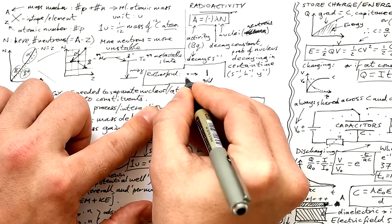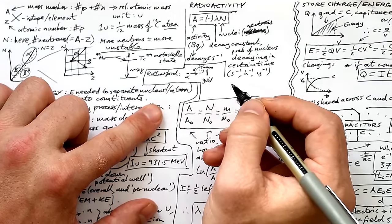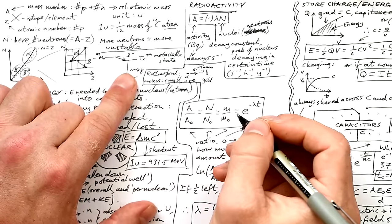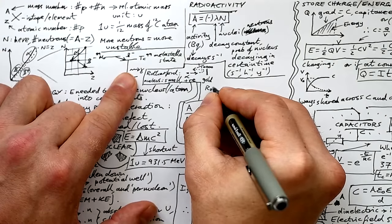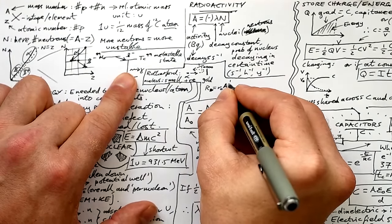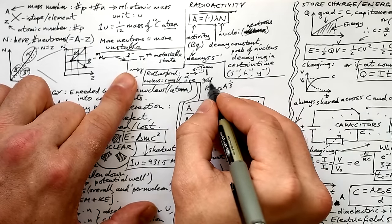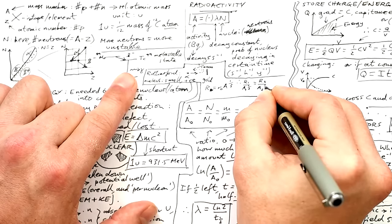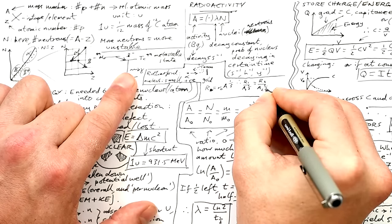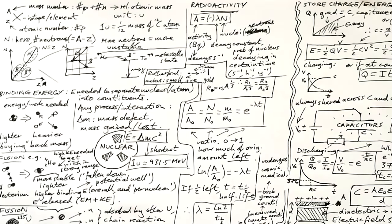Rutherford scattering: alpha particles were fired at a thin gold foil. Most went through but about 1 in 10,000 were deflected back, showing the nucleus was small compared to the atom and positively charged. The nuclear radius equation: r equals r₀ times A^(1/3), where r₀ is the nuclear radius constant and A is the number of nucleons. To compare two nuclei: r₁/r₂ equals (A₁/A₂)^(1/3).